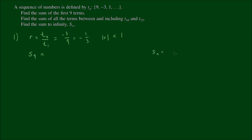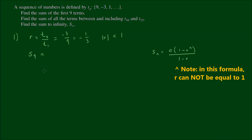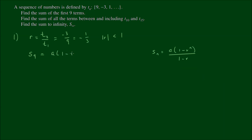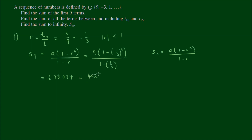For S9, we use the formula: S_n equals a times (1 minus r to the power of n) divided by (1 minus r). Substituting: 9 times (1 minus negative one-third to the power of 9) divided by (1 minus negative one-third). Plugging into a calculator gives approximately 6.75034, or precisely expressed as an improper fraction, 4921 over 729.